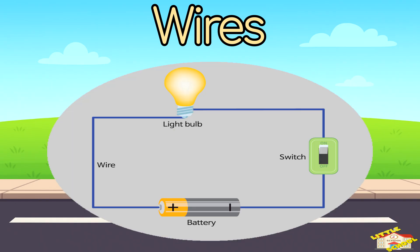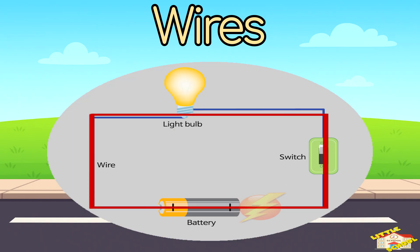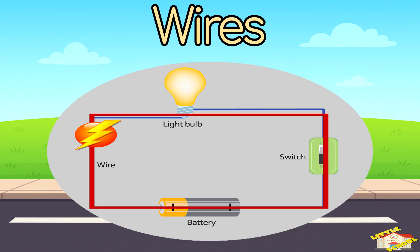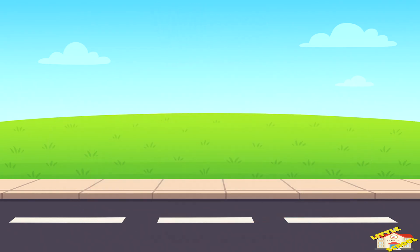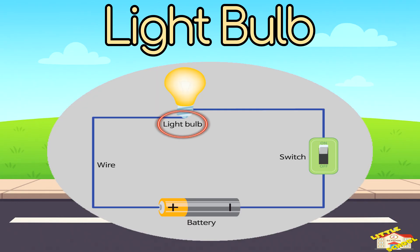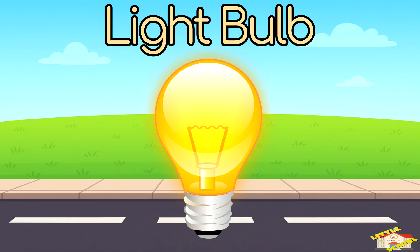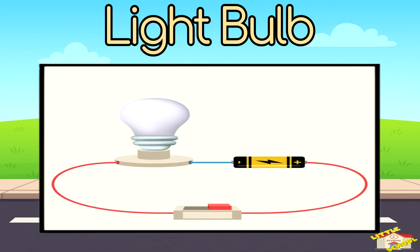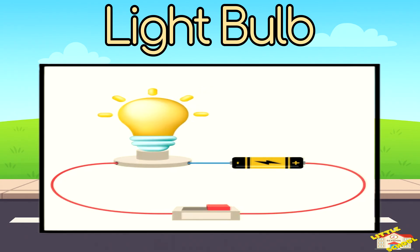Wires connect all the parts together so electricity can move. Number three: the light bulb. The light bulb is the output. If the circuit works, the bulb will light up.